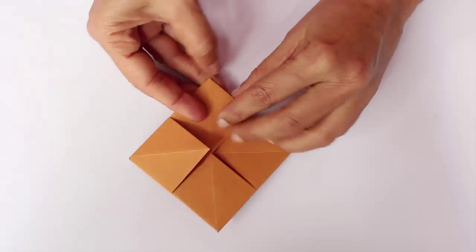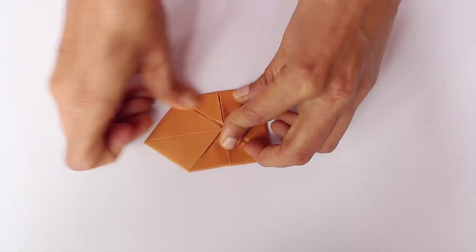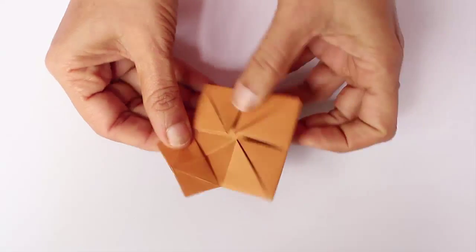Now repeat this again. Upturn the paper. Once again fold all the four corners to the center to make a really small envelope.